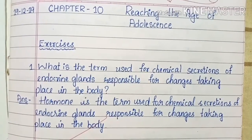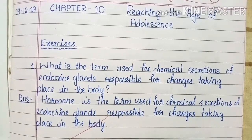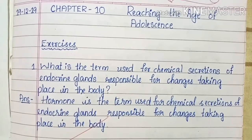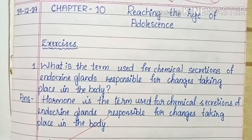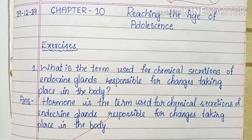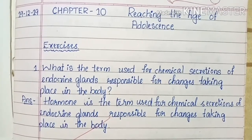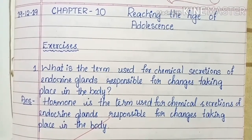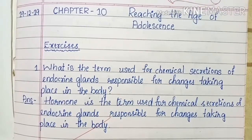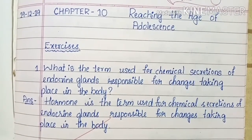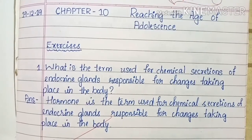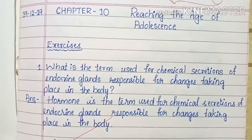My dear 8th standard students, welcome to our Aizu Allrounder channel. Today we will discuss chapter 10: Reaching the Age of Adolescence. Now we will see the exercises.